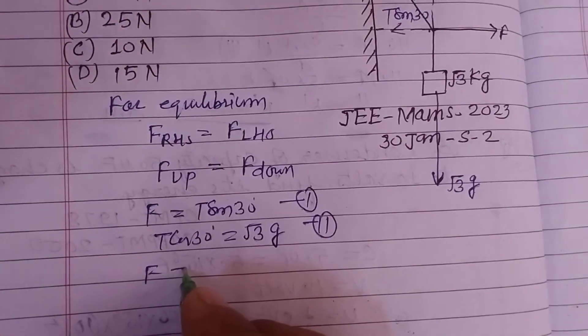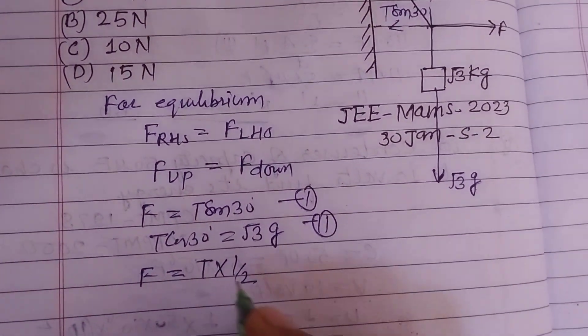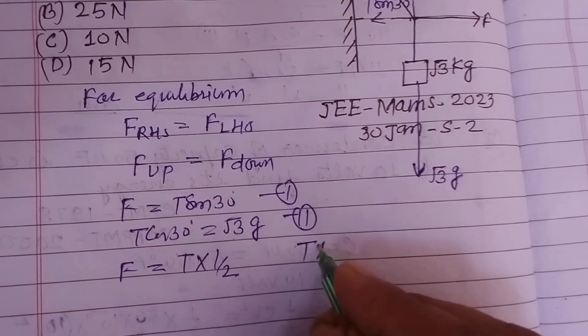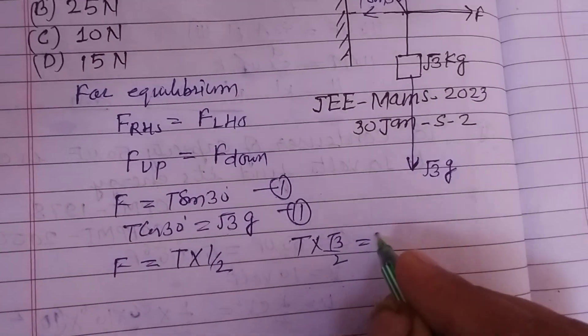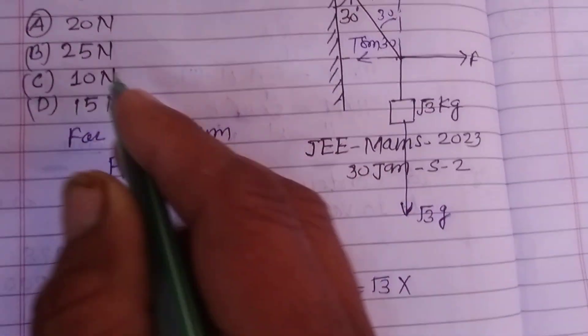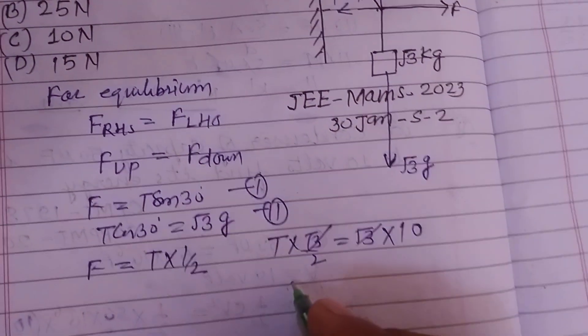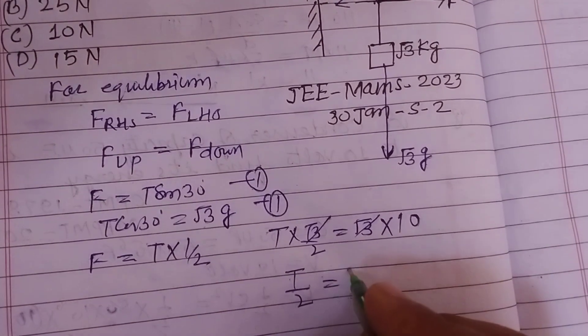F equals T sin 30° which is 1/2, and T cos 30° is √3/2 equal to √3. G is given to us as 10 m/s². So √3 cancel, T/2 equals 10.